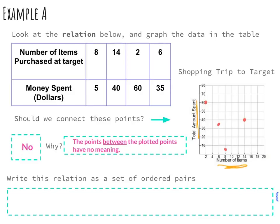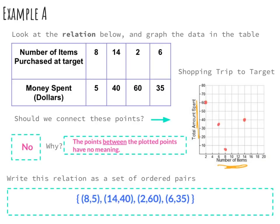The last thing we need to do is write this relation as a set of ordered pairs, using a special shape known as a brace. Anytime you write a set of ordered pairs in this unit, you need to have these braces. They don't have to be drawn perfectly, but they should be identifiable as braces, denoting that they are part of a set.